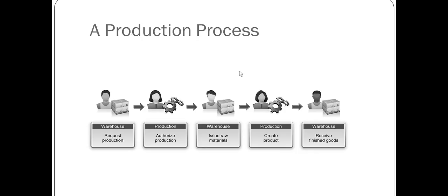The production process begins with a request for production. You need an order from a customer to fulfill, which you fulfill by manufacturing products. You create a request for production, authorize the production, and issue the raw materials needed. Once production is completed, the warehouse receives the finished goods, ready to be shipped out to the customer that ordered them. That's your production process.